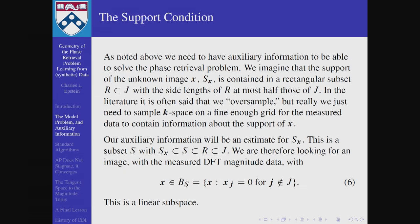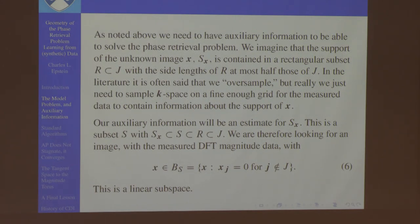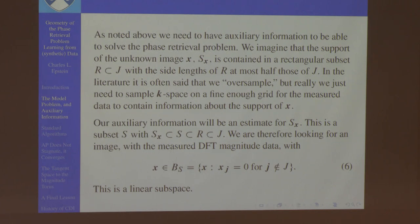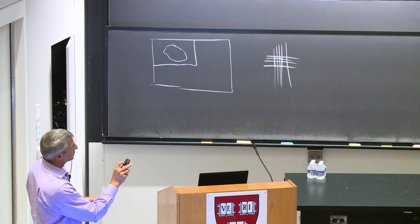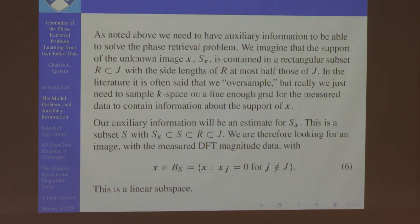We need auxiliary information. We call S_X the support of the unknown image — that's the collection of indices where X_J is not zero. We assume this set is contained in a rectangular subset whose side lengths are at most half of the side lengths of J. So to solve the problem, we're looking for an image with the given measured magnitude DFT data that vanishes outside our support estimate S.